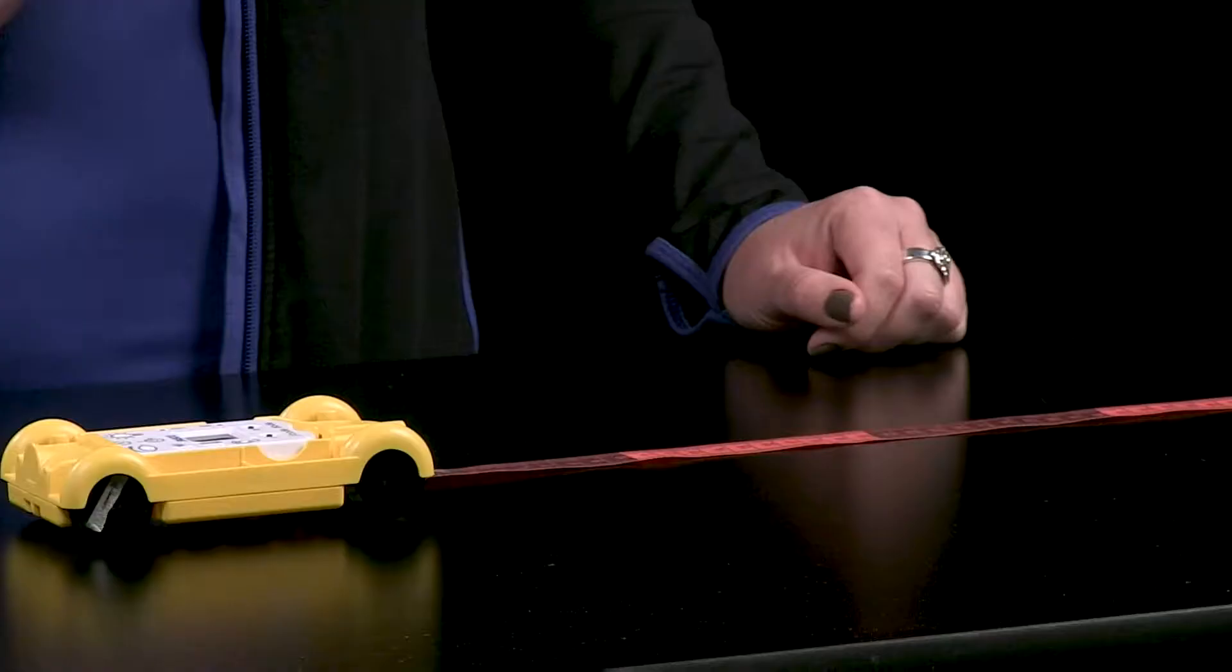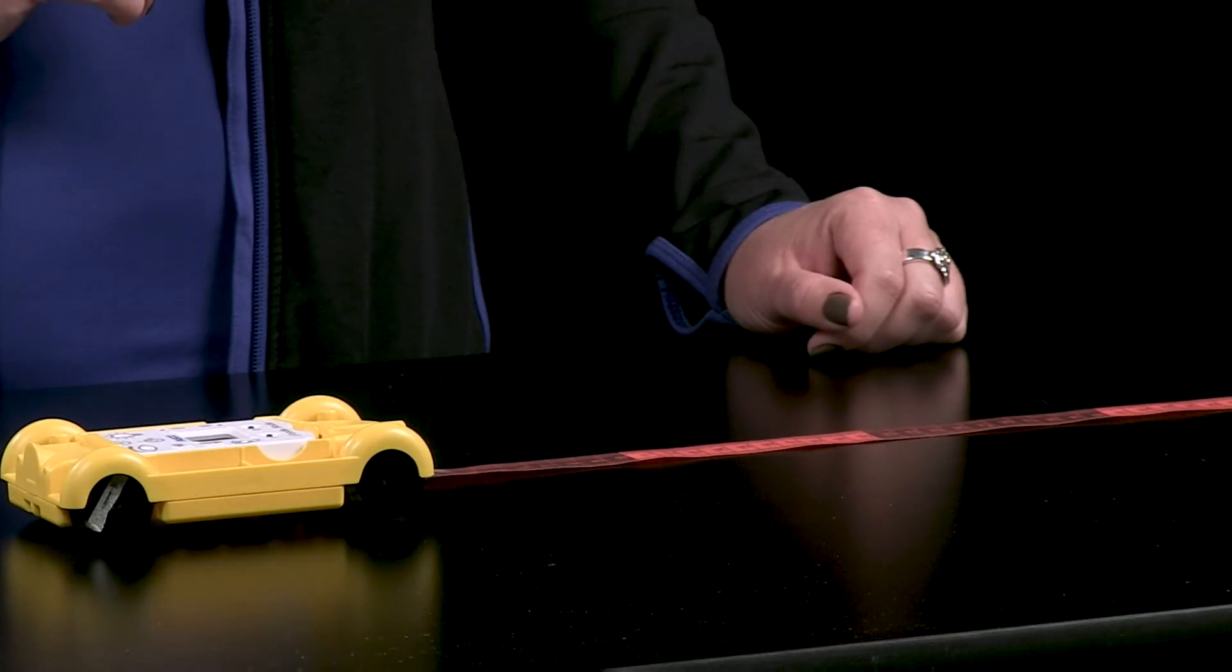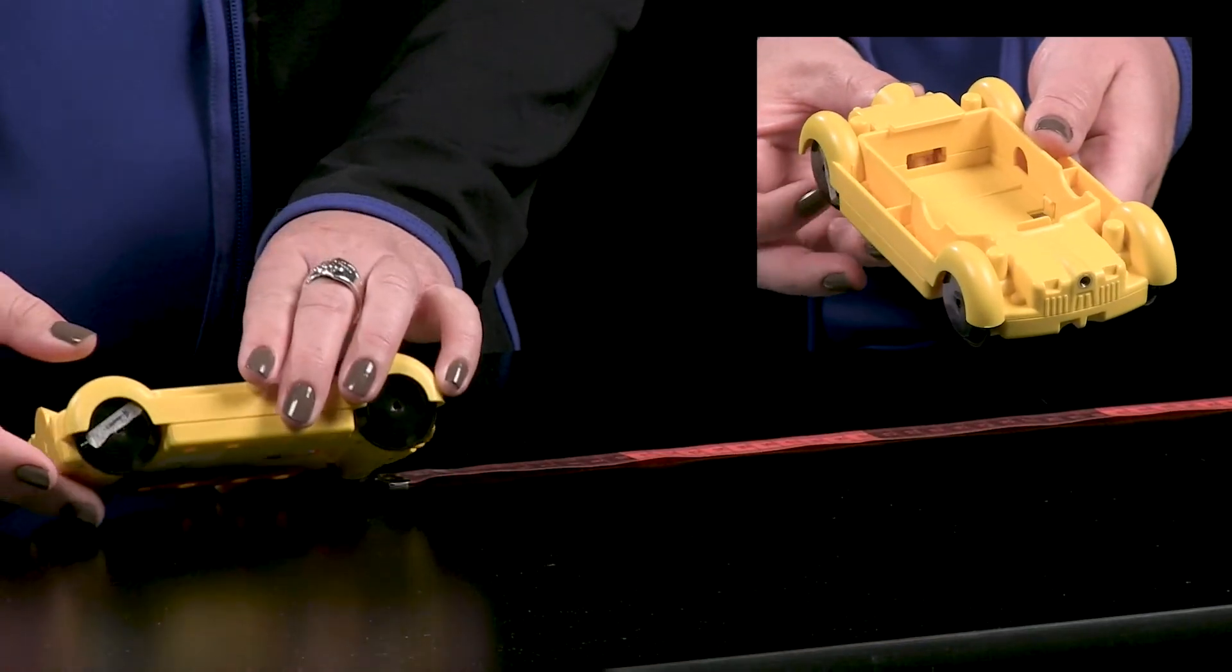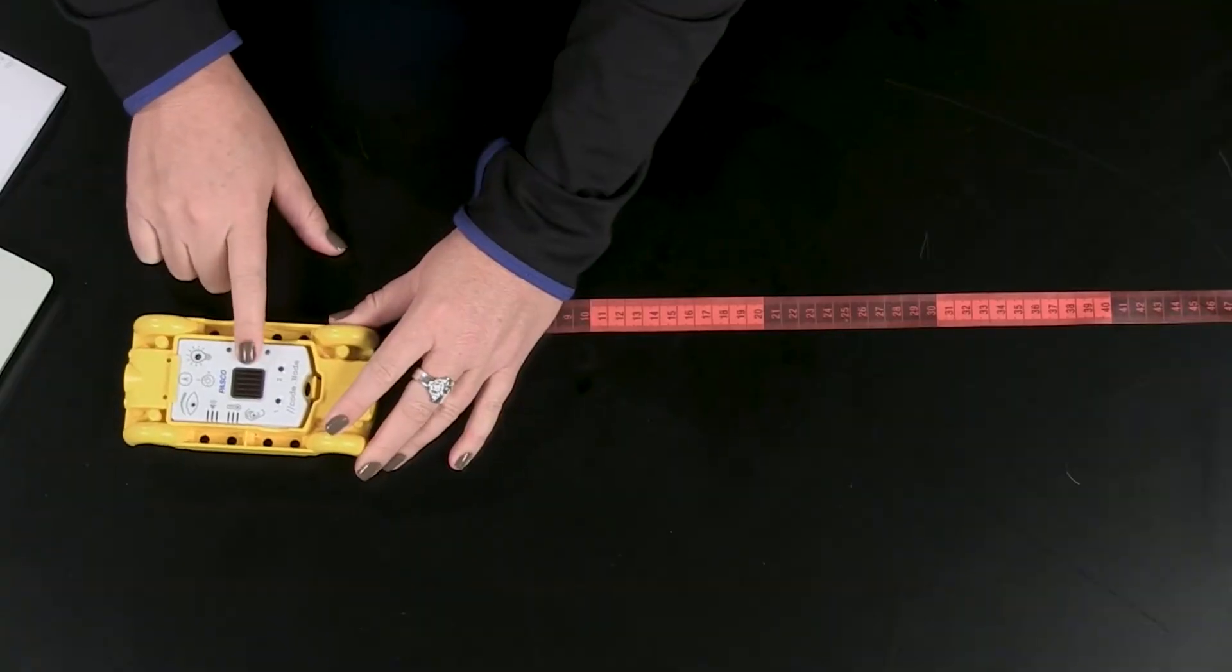Keep in mind, if students have not had experience in calculating circumference, they may need some additional support with the first two sections of the lab. Once students have calculated the circumference of the CART's wheel, they will spend some time reverse engineering how the CART determines position using the bar magnet on the axle along with the magnetic field sensor within the CodeNode.